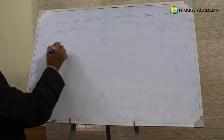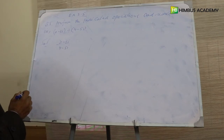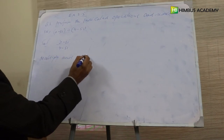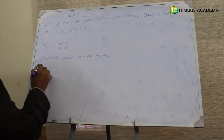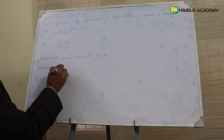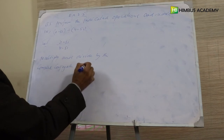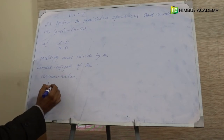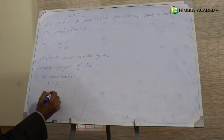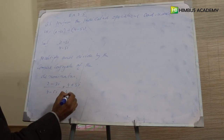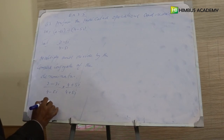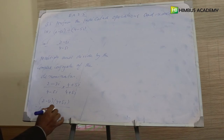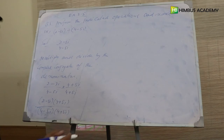اب لکھنا ہے: (2 minus 3 iota) divide by (4 minus 5 iota)۔ اب پہلے کی طرح multiply and divide by the complex conjugate of the denominator۔ تو (2 minus 3 iota) divided by (4 minus 5 iota) کو multiply کریں گے (4 plus 5 iota) over (4 plus 5 iota) سے۔